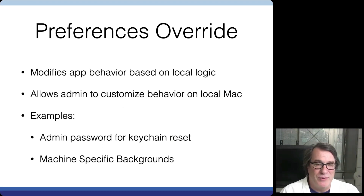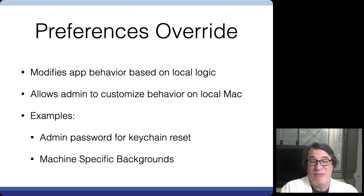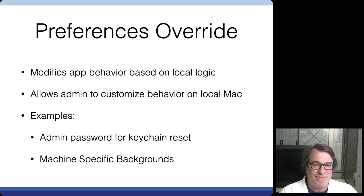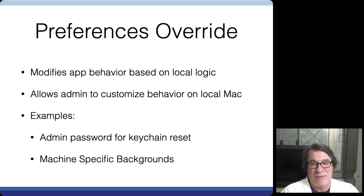Why is that important? It allows the machine to override preferences based on local logic. For example, if machines on a specific IP address want a different desktop background or a different identity provider, you could provide that configuration locally based on the IP. Laptops on one subnet versus another could have different behavior. It really allows customization based on the logic in that script. We provide an example script for you to see how it works, and you can extend it however you want.